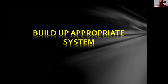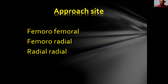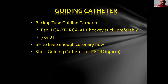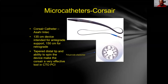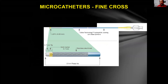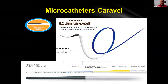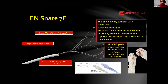Build up an appropriate system. You have to puncture double access — femoral-femoral, femoral-radial, or radial-radial. The guiding catheter should be backup type, especially for left — XB, RCA AL1 or hockey stick — preferably 7 to 8 French with side hole to maintain collateral flow. For retrograde cases, use a short guiding catheter of 90 centimeters. You also need wire support devices such as Corsair, Channel Dilator, Caravel, Finecross — with a very short profile tip — and a snare to catch the retrograde wire into the antegrade guide catheter.